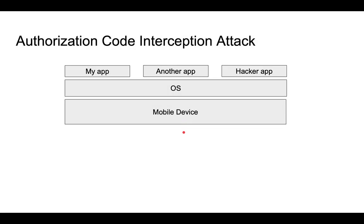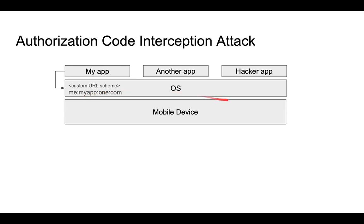Here's a little more detail on how this attack works, and I'm explaining it for mobile devices with mobile apps because it makes it easier to follow. Let's say there's a mobile device which has an operating system, and there are several applications or apps installed, and my app may be yours. What you would do if you had an app that uses an authorization code flow, you would register a custom URL scheme for this app, which could be myapp.one.com.